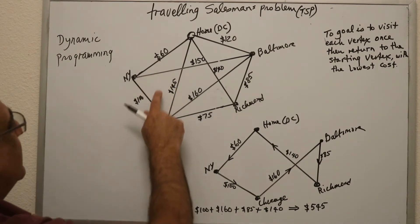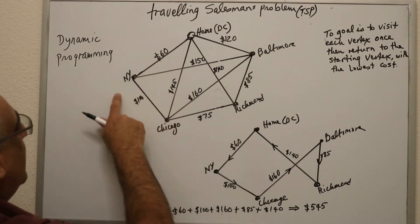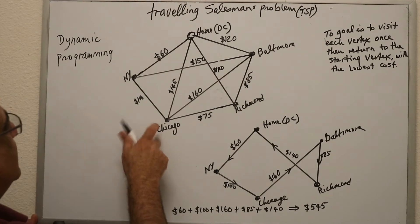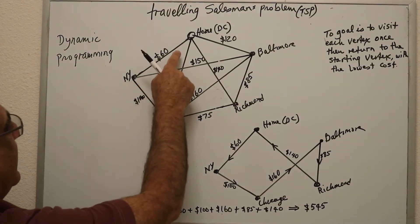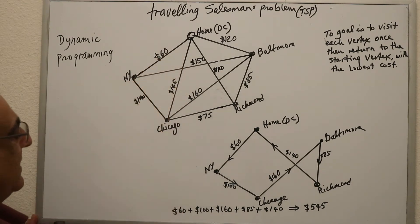Now from here, once I'm in New York, I guess my best bet is to go to Chicago which is $100. So now I have from Washington DC to New York to Chicago.